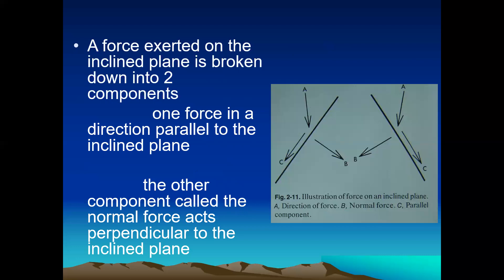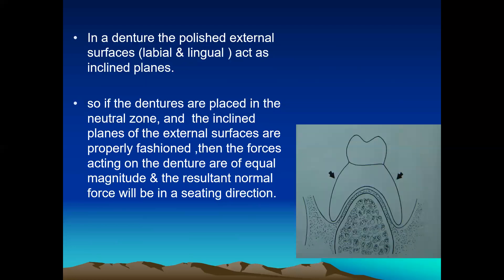You can see in this diagram that a force exerted on an inclined plane has two components. The first component acts in the direction parallel to the inclined plane — that is, C in this diagram — and the other component, called the normal force, acts perpendicular to the inclined plane, denominated as B in this diagram. In a denture, the polished or external surface acts as the inclined plane. If the dentures are placed in the Neutral Zone and the inclined planes of the external surfaces are properly fashioned, then the forces acting on the denture are of equal magnitude, and the resultant normal force will be in the seating direction — acting as a seating force rather than a dislodging force.